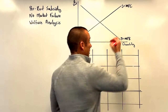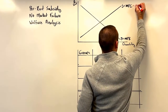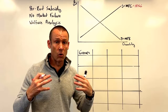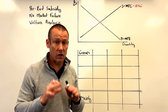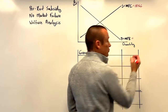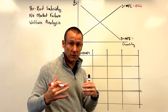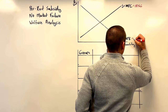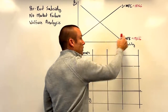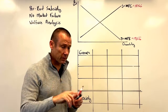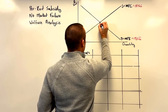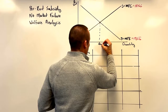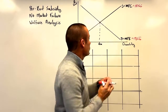Marginal private cost equals marginal social cost — the total cost to society. What the supplier bases decisions on is the total cost to society, not just their own internalized cost. There's no external benefit from consumption beyond what the consumer internalizes, so marginal private benefit equals marginal social benefit. This emphasizes no market failures, meaning Qm and Q-optimal are in the same place.